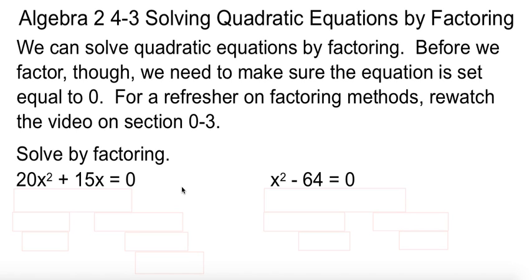And as we learned back in 0-3, the first thing we look for is a common factor. Is there anything in common between these things? Sure there is. There's a 5 in both of them, and there's an x. So if I factor the 5x out, that leaves me 4x plus 3.